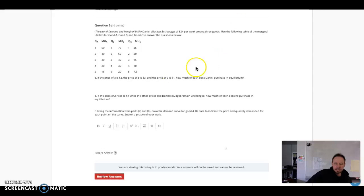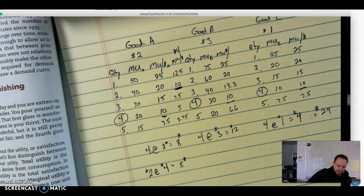If that makes sense, the last one: use the information from part B and draw the demand curve for good A. Really, marginal utility in consumer equilibrium is how we derive demand curves. When you get into upper-level college econ courses, this is how we actually derive individual demand curves. We're just doing a simplistic view.